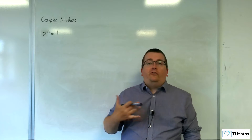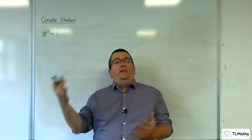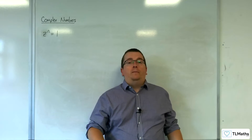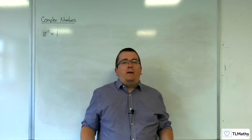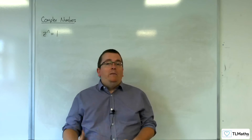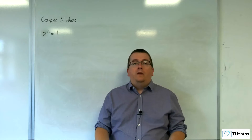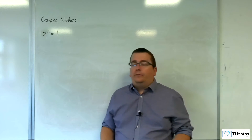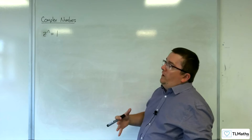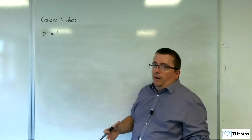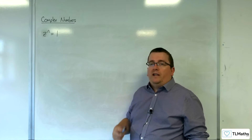In the previous video, we were exploring z squared equals 1, z cubed equals 1, z to the 4 equals 1. We found the roots, we plotted them on an Argand diagram, and we came to some conclusions. We were looking at similarities and patterns. In this video, I want to formalise the nth roots of unity, so you can see where it's really coming from.